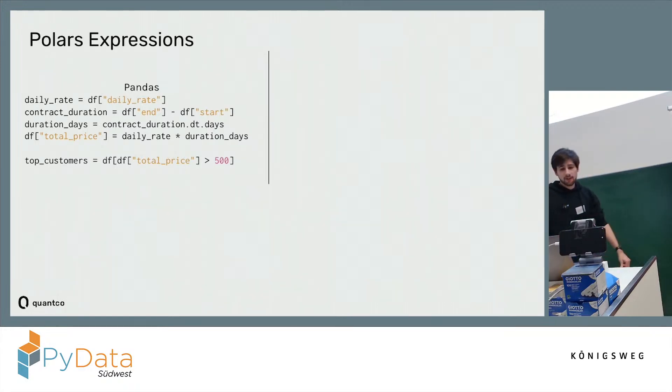Consider this Pandas example on the left here, which is just some standard Pandas code where we want to find our top paying customers. Top paying customers being customers who paid more than 500 euros in total over their whole contract duration. We do so by first figuring out the daily rate they paid, then how long they actually were our customers.